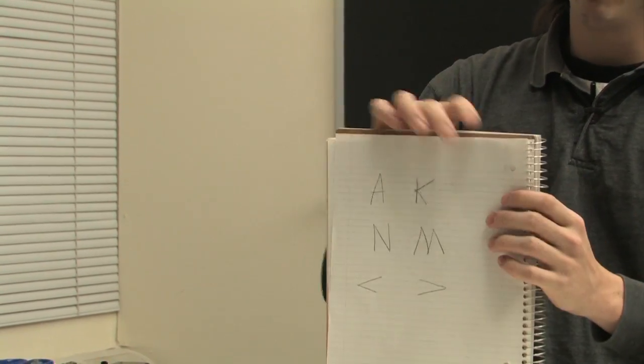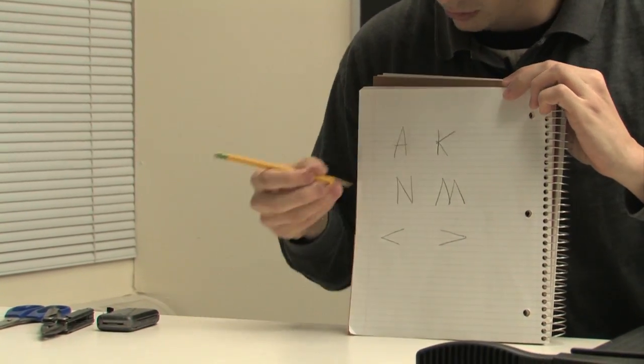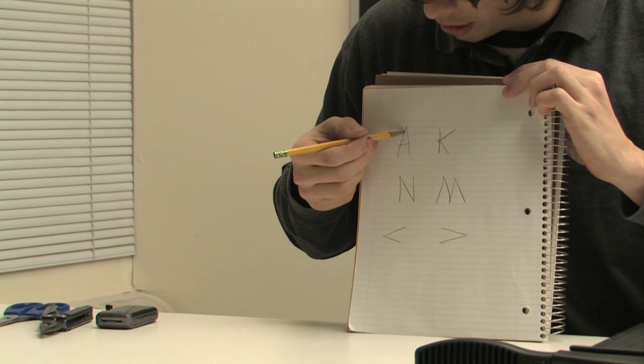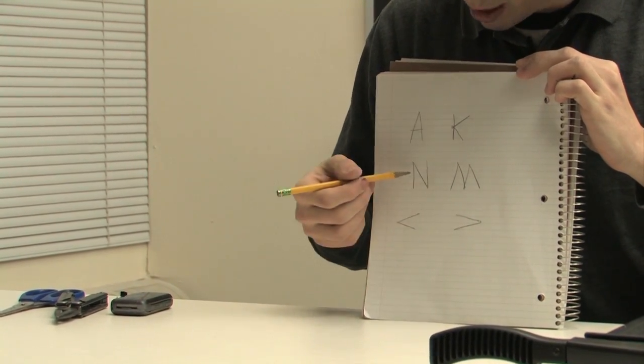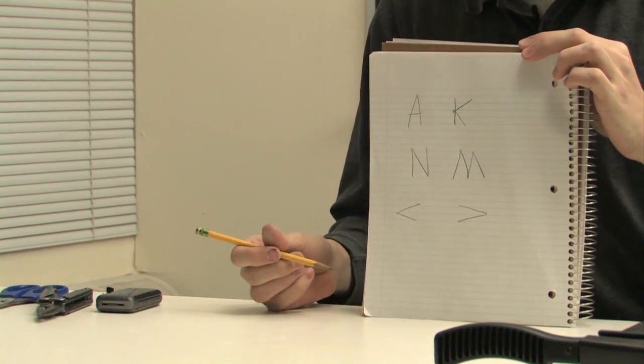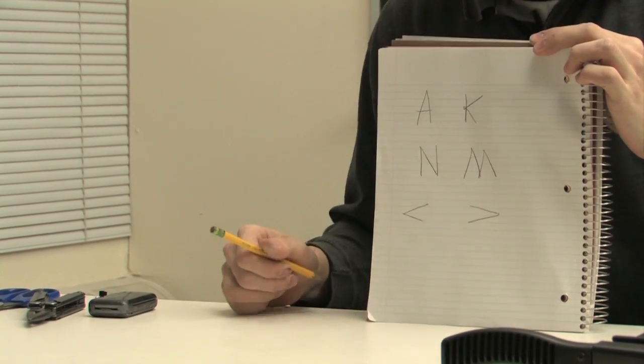The letters written on the page often have acute angles too. Look at the top of this A creates an acute angle. This K has three acute angles in it. M and N both have acute angles, as do the less than and greater than symbols.